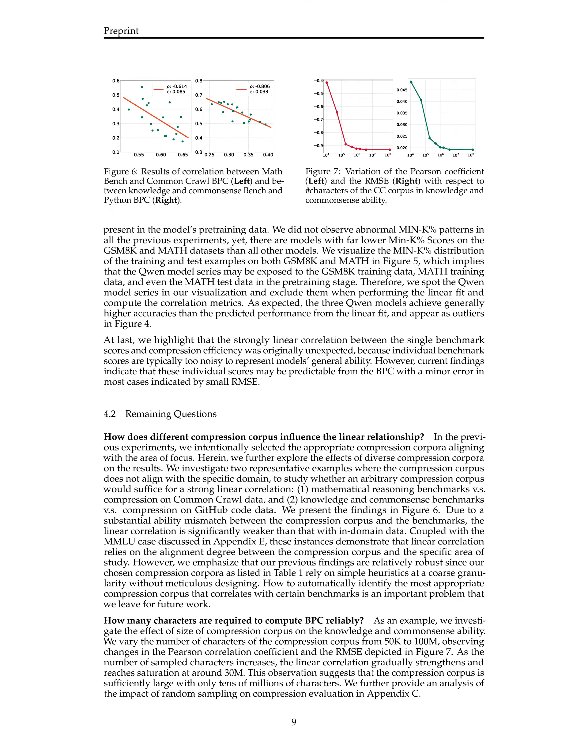The researchers also compared the compression efficiency of the models on different corpora to study the effects of diverse compression corpora on the results, demonstrating that the linear correlation relies on the alignment degree between the compression corpus and the specific area of study. They also varied the size of the compression corpus to analyze the impact on correlation strength, showing that the compression corpus is sufficiently large with only tens of millions of characters.